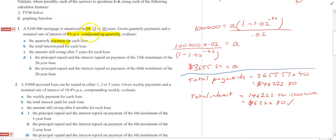Now, again, the question asks you to do 10, 15, 20 years. If you're stretching your loan over a longer period of time, your repayments will be smaller, I believe, but your total interest that you pay over the life of the loan will be longer because you're borrowing the money for a longer period of time. All right. C. The amount still owing after five years for each loan.